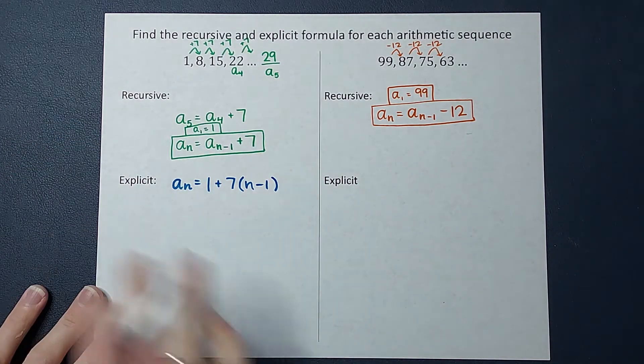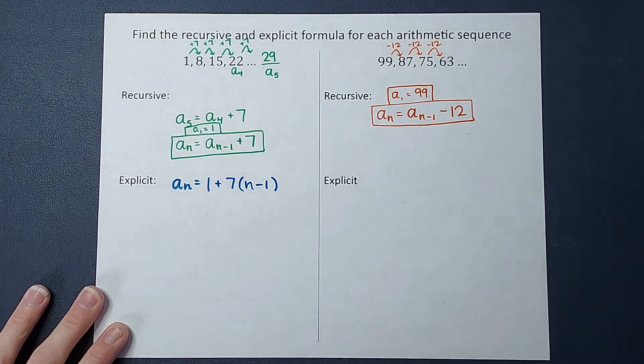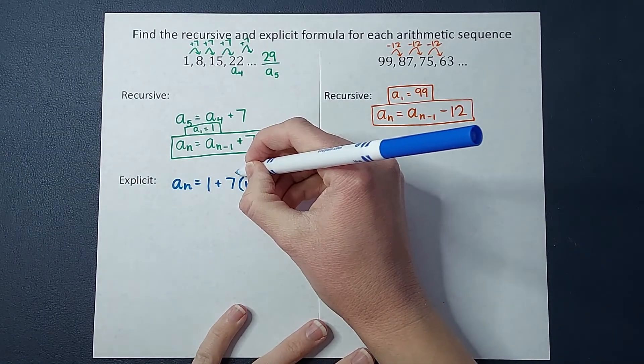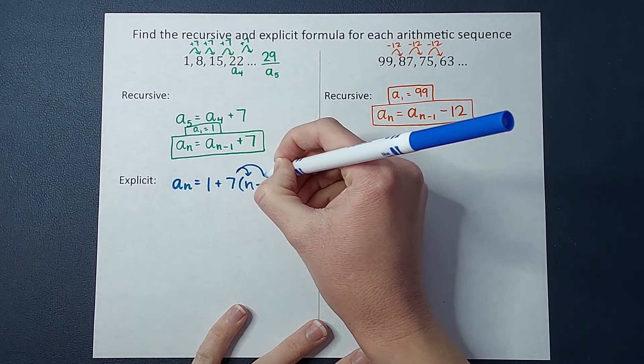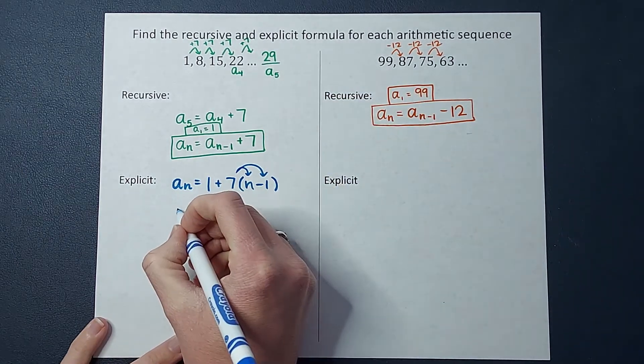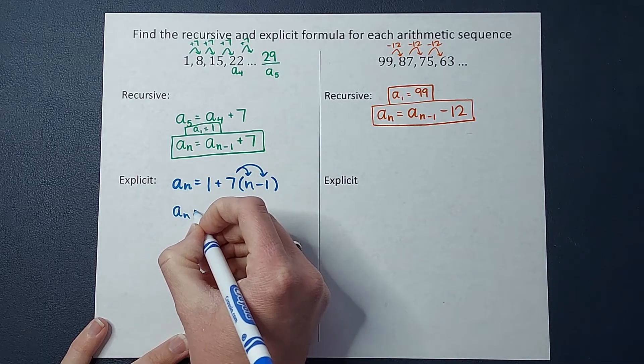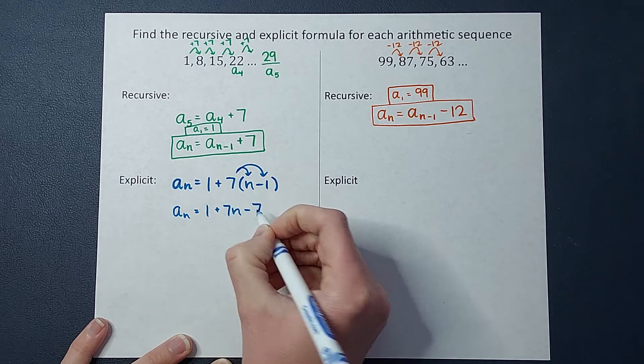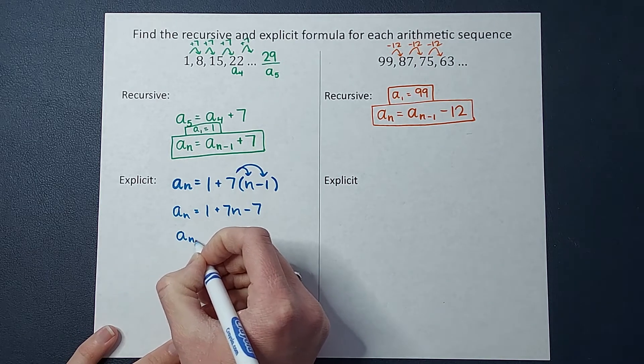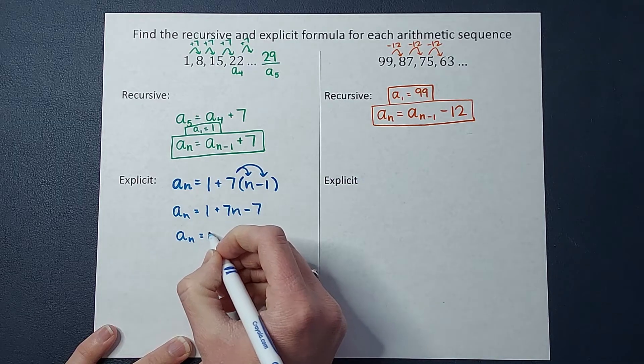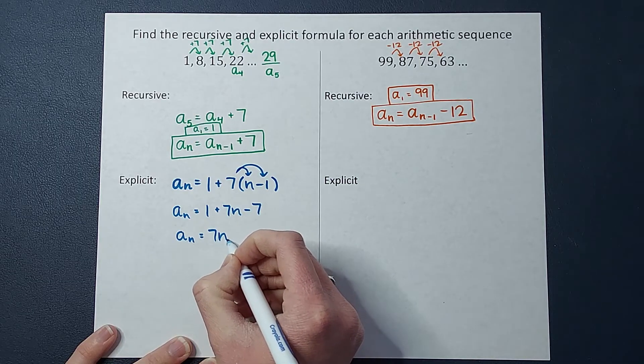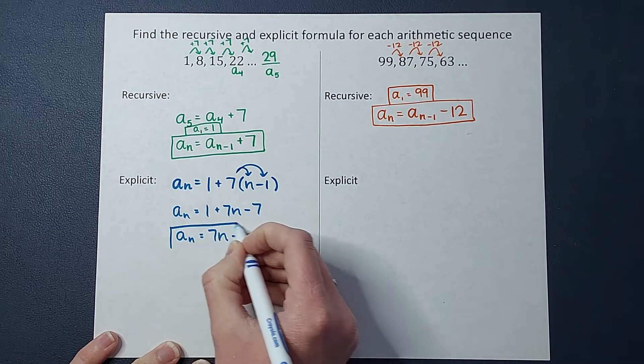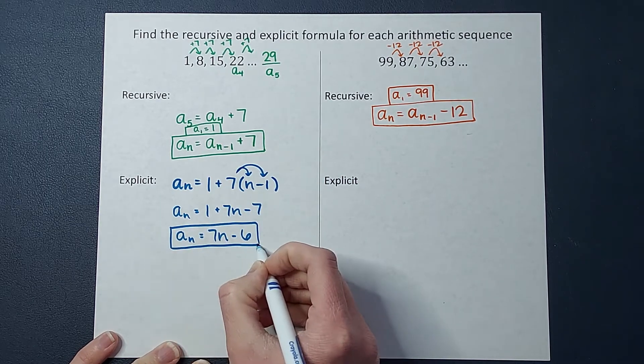Some teachers might want you just to leave it like that. Some might want you to get rid of these parentheses. So that's what we're going to do. We are going to distribute this in and have a sub n equals one plus seven n minus seven. And then we're going to continue to solve that down and end up with seven n minus six.